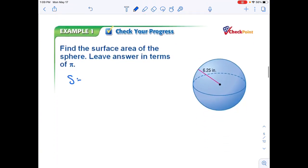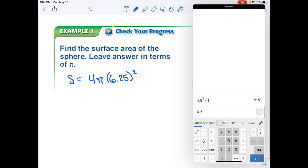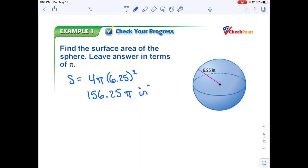It's very similar. They give us the radius once again. So it's 4 times π times our radius, 6.25 squared. We get 156.25π. And this time it is square inches for our surface area.